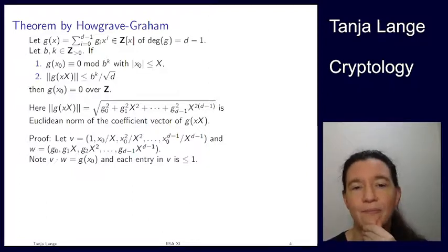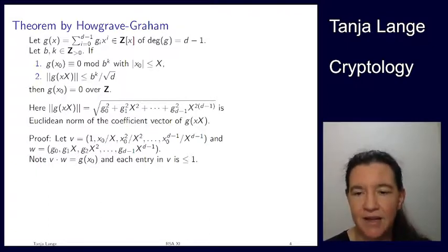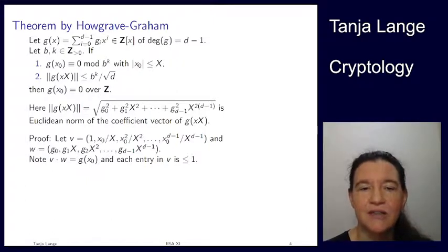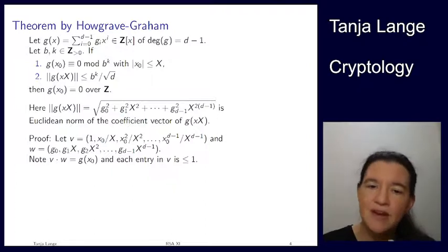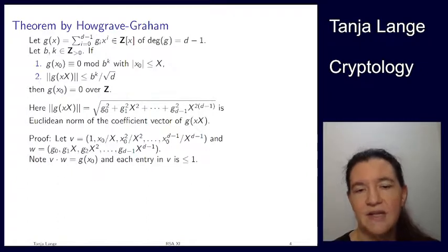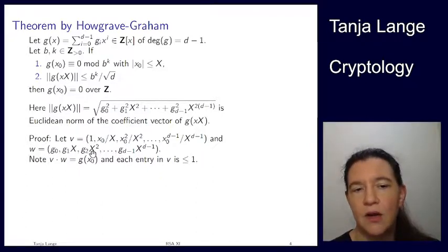Let's prove this using linear algebra. Define a vector v = (1, x_0/X, x_0²/X², …, x_0^{d−1}/X^{d−1}). Each entry in absolute value is less than one since |x_0| ≤ X. The other vector w is the coefficient vector of g(x·X): (g_0, g_1·X, …, g_d·X^d). Multiplying them — this is the dot product — the X's cancel and we get g_0 + g_1·x_0 + g_2·x_0² + … = g(x_0).